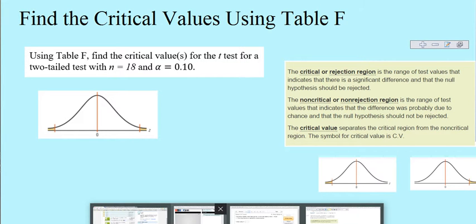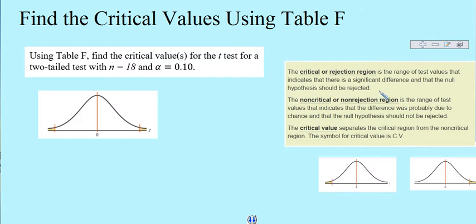This video will help you understand how to find the critical values using Table F for a two-tailed test. What we have to visualize is that we're trying to establish whether or not we would accept or reject that null hypothesis. It's a two-tailed test, so it's either one side or possibly the other.